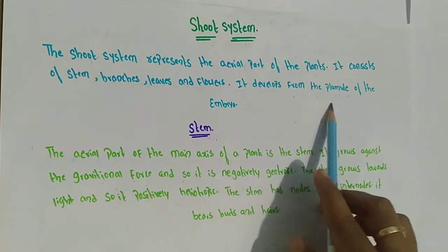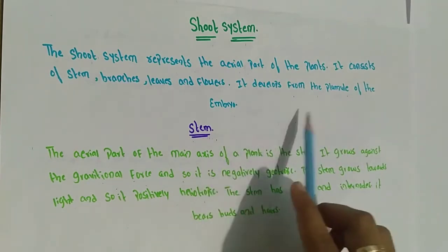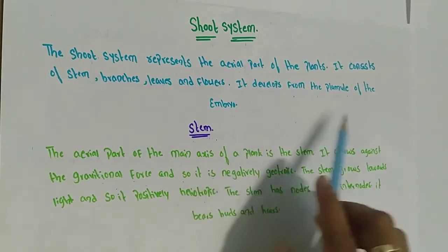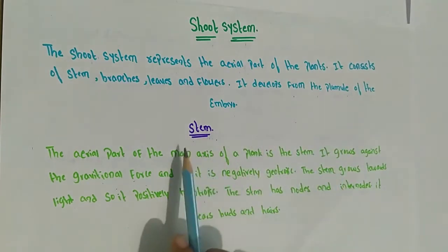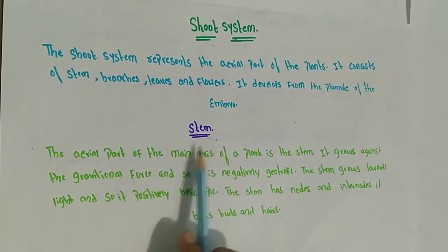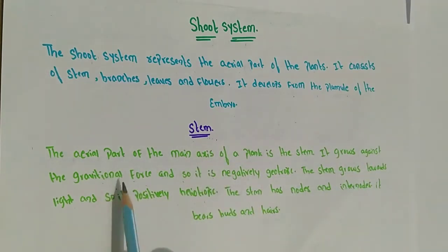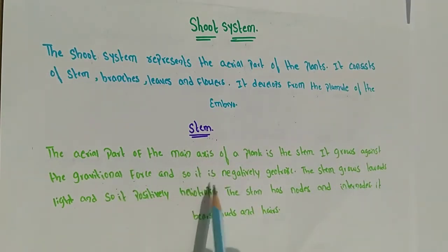The shoot system develops from the plumule of the embryo. Plumule means the stem of an embryo plant. The stem is the main part of a plant. It grows against the gravitational force, so it is negatively geotropic.